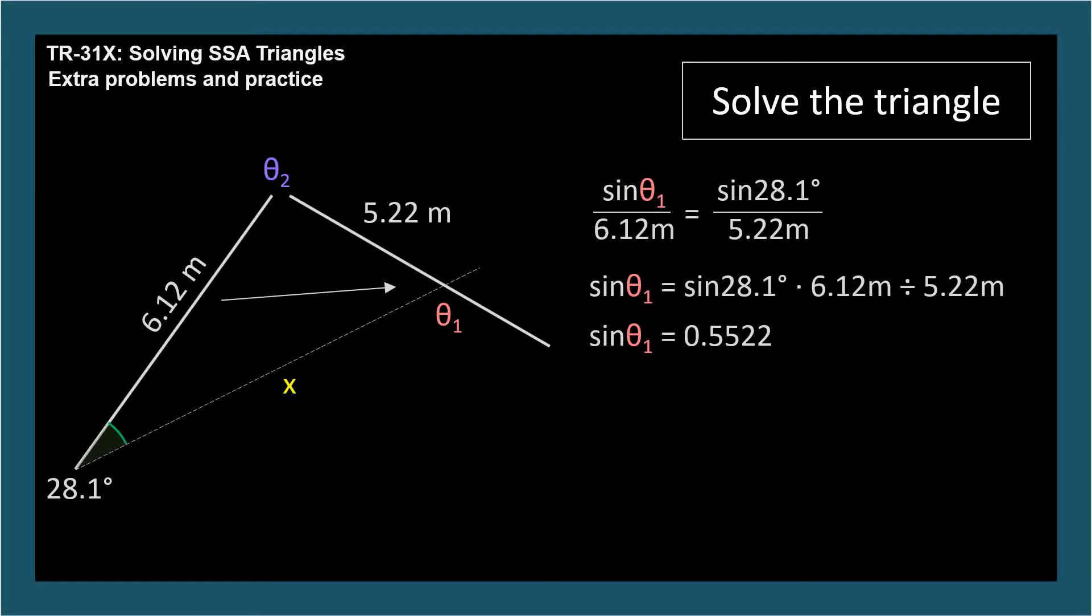Now we know the sine of theta 1, so we use arcsine to find theta 1. We'll mark this value for sine theta 1, because we'll come back to it later when we check for a second solution. We know the sine of theta sub 1, so to find theta sub 1, we use the arcsine function and get 33.5 degrees.